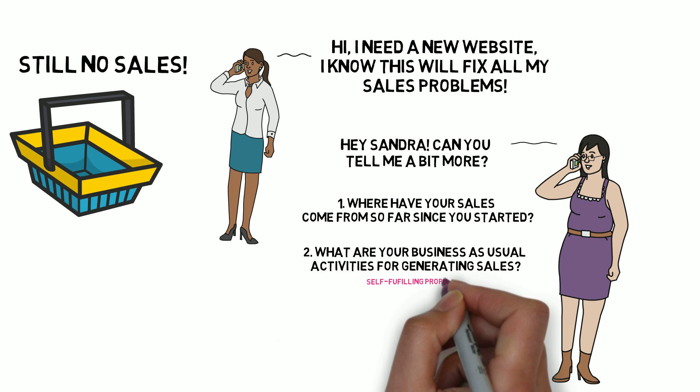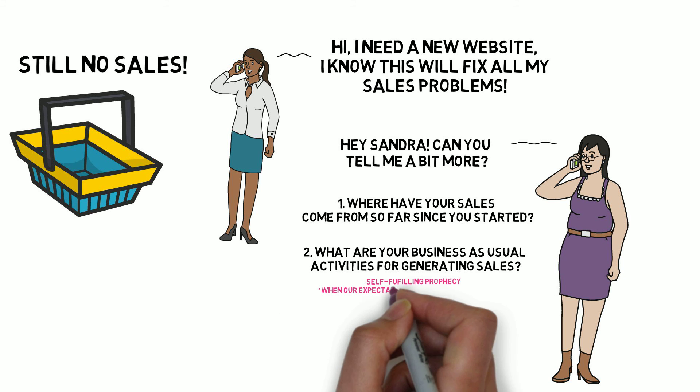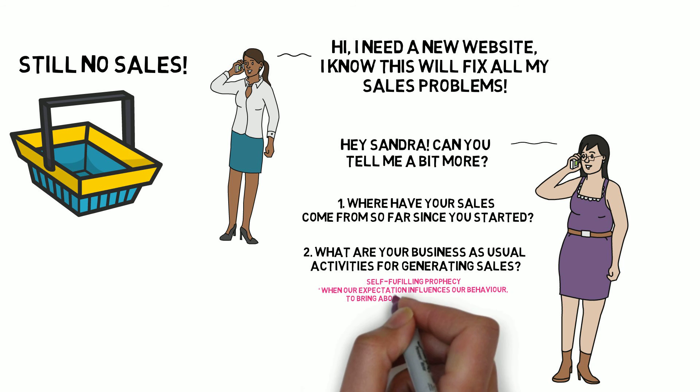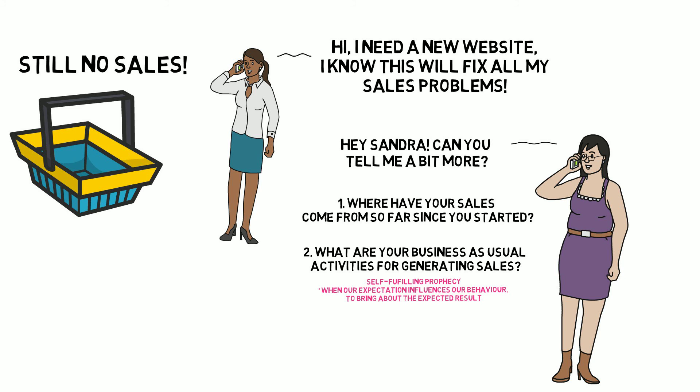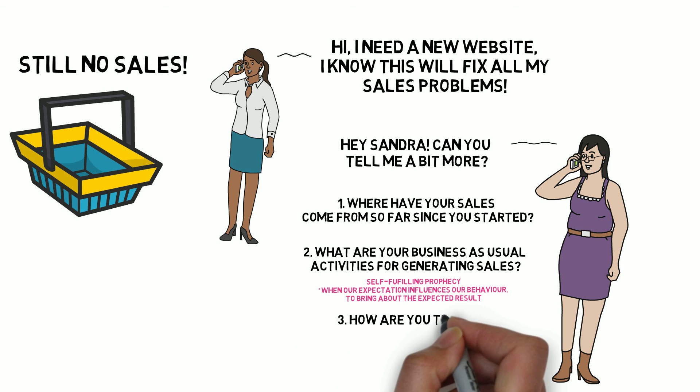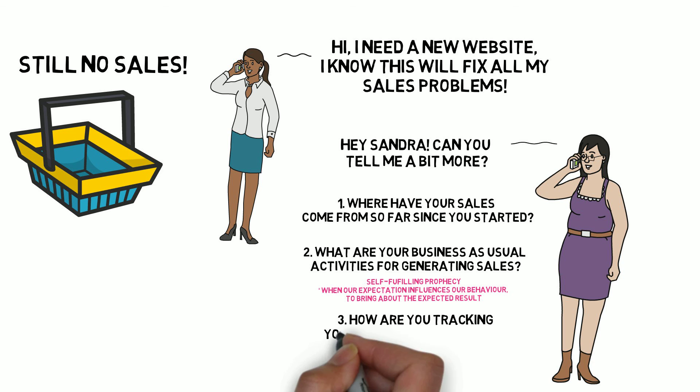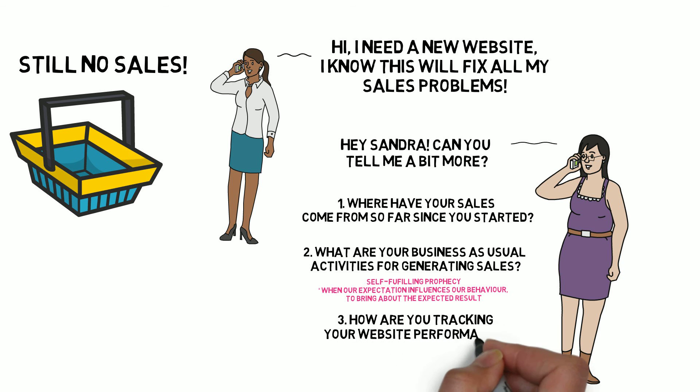This is called a self-fulfilling prophecy — another cognitive bias also known as the behavioral confirmation effect — which is when a person's expectations influence their behavior to bring about the expected results, in this case the lack of new sales. Thirdly, we'd want to look at whether there are other problems that relate to the website. Maybe the website itself is great. Maybe the problem is getting traffic to the website.